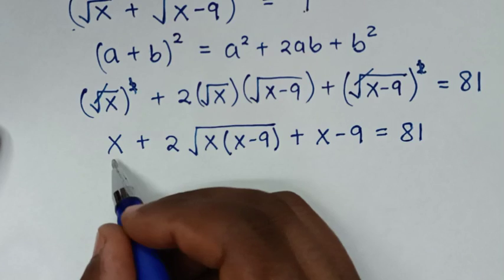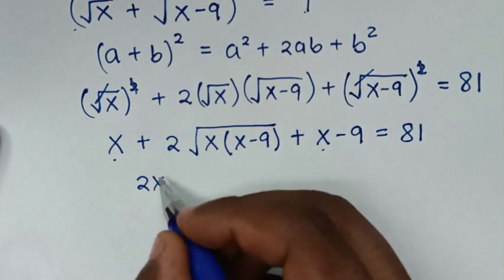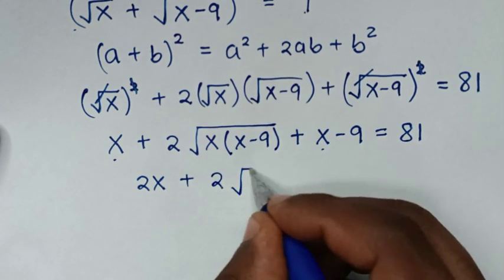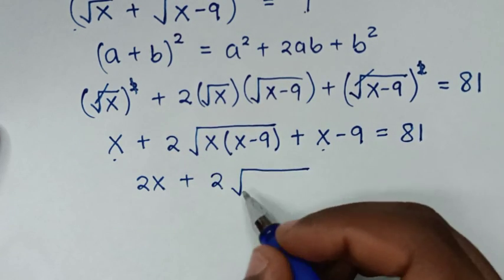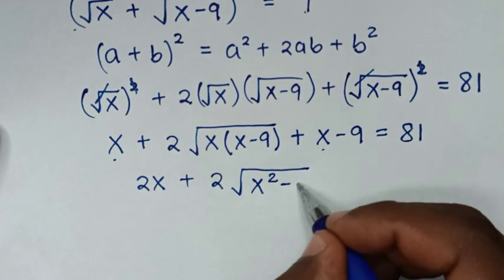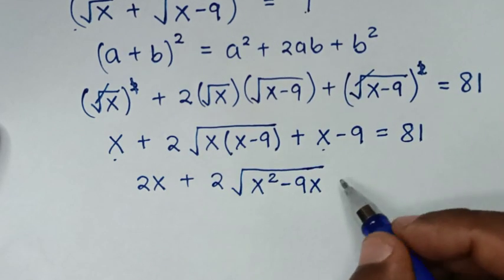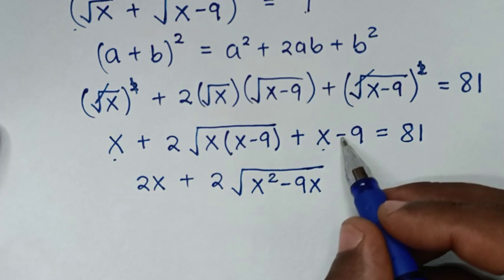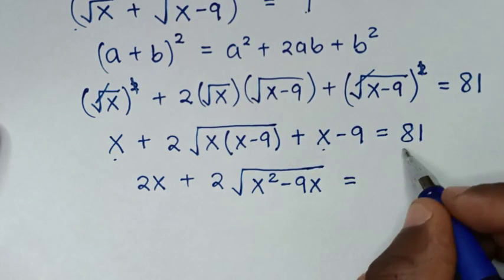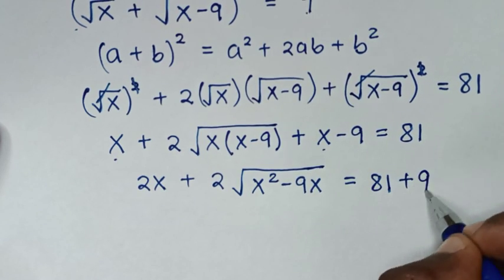In the next step, x plus x is 2x, then plus 2 times √(x²−9x) — since √x times √(x−9) gives √(x²−9x) — then we are left with the −9. We take −9 to the right side, so it becomes equal to 81, and negative 9 becomes plus 9 on the right.